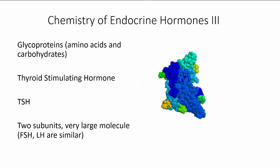Hormones can be quite large and complex molecules. Here we see a glycoprotein. This is one part of thyroid stimulating hormone or TSH. Follicle stimulating hormone FSH and luteinizing hormone LH have similar shapes.